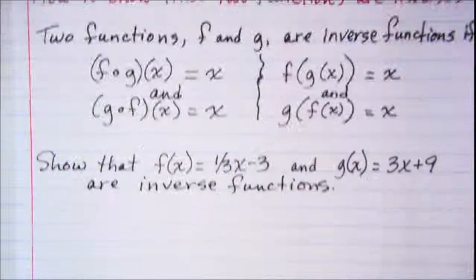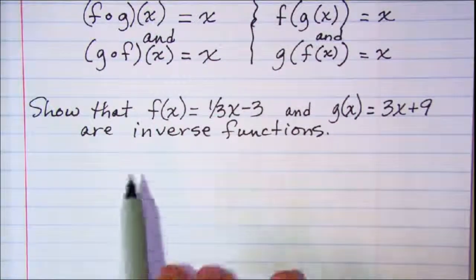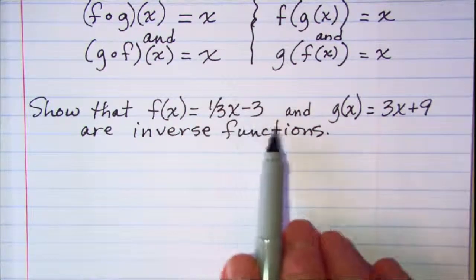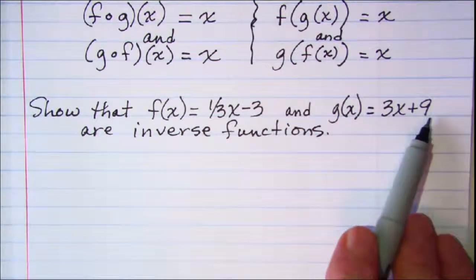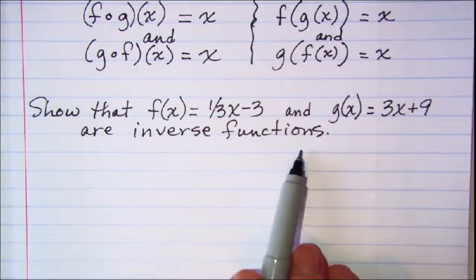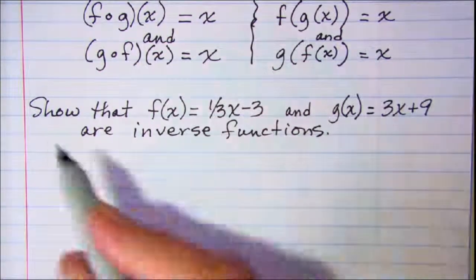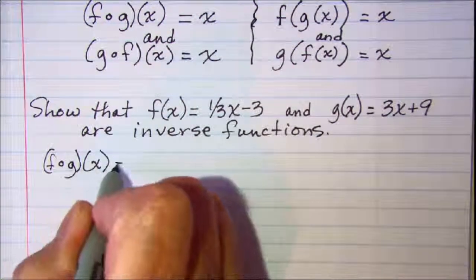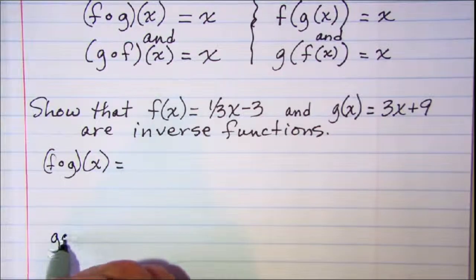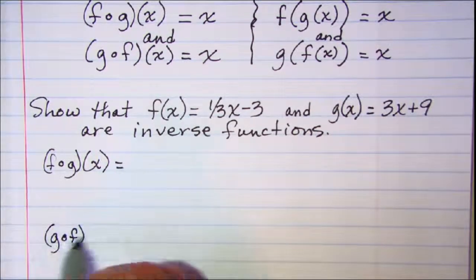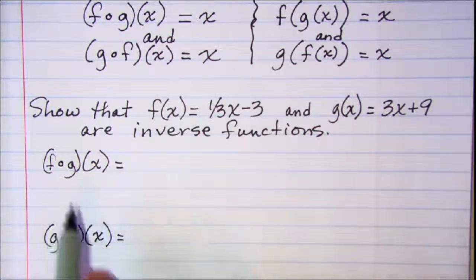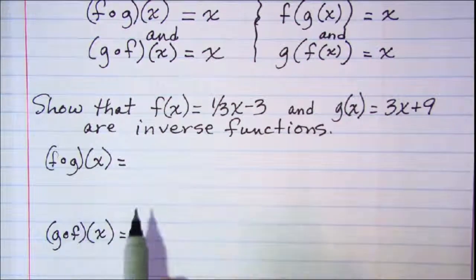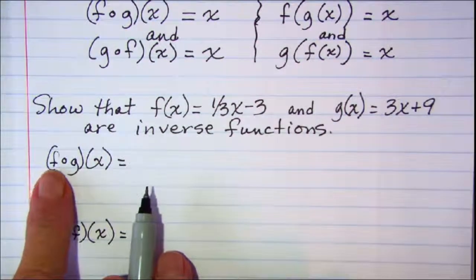In our first example, we're asked to show that f of x, which equals one-third x minus 3, and g of x, which equals 3x plus 9, are inverse functions. So we need to find both f composition g of x and g composition f of x, and if those are both equal to x, then the functions f and g are inverse functions.